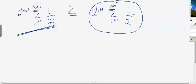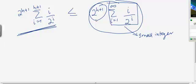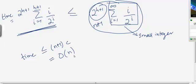The reason we replace h plus 1 with infinity is we can directly use the formula for an infinite arithmetical geometric progression, and that formula will give you a small integer, and this value is n plus 1. So basically the total time that build heap takes is less than or equal to n plus 1 times some constant c, and this means the total time is order n.